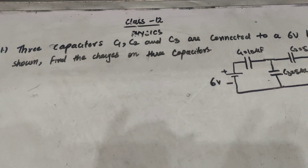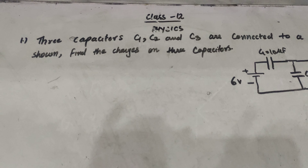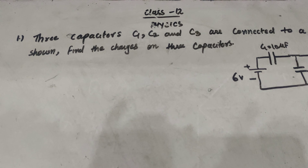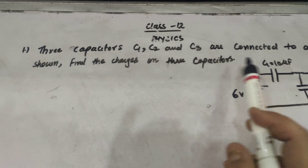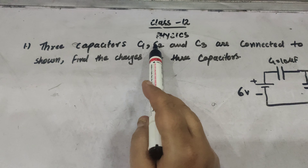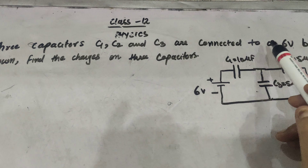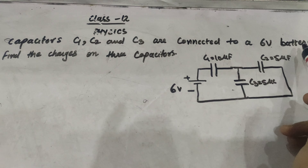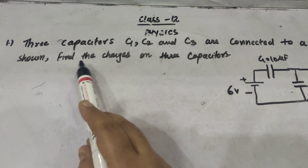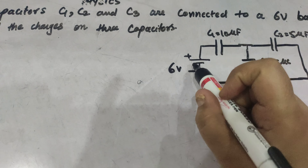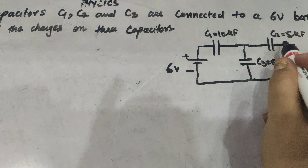Let us now do some numericals based on the series-parallel combination of capacitors. Here you can see the diagram. The statement is: three capacitors C1, C2, and C3 are connected to a six-volt battery as shown. Find the charges on the three capacitors. The six-volt battery is connected across these three capacitors as shown.